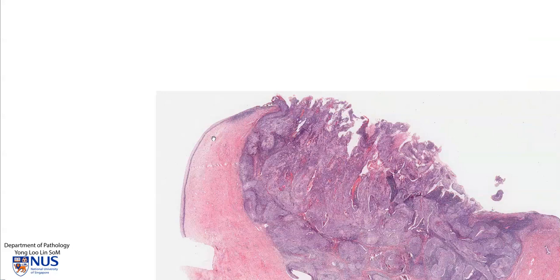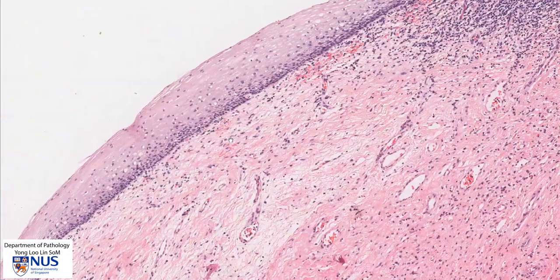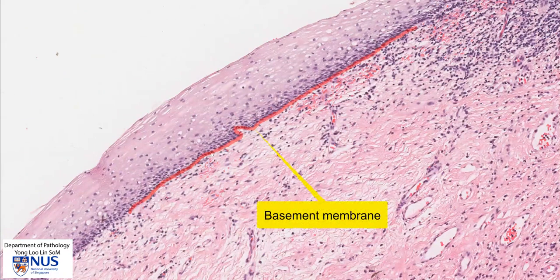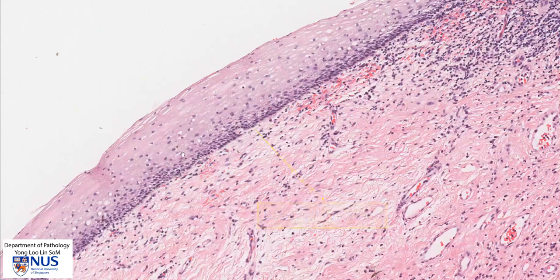Let's have a very quick recap of the stratified squamous epithelium of the normal ectocervix first. So here we can see the normal ectocervix, and this is the basement membrane. We can't really see it, but we can tell that the epithelium is very regimented and forming a line beyond which it does not go. So this is the basal layer of the stratified squamous epithelium.